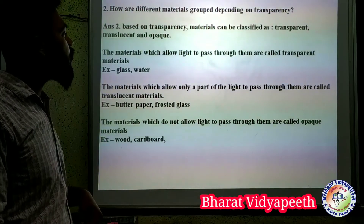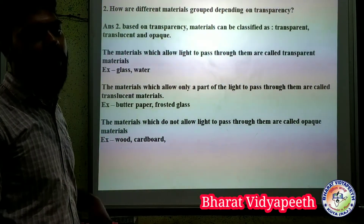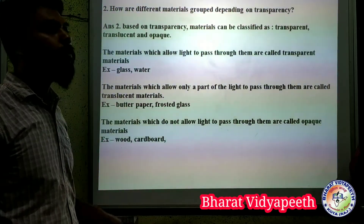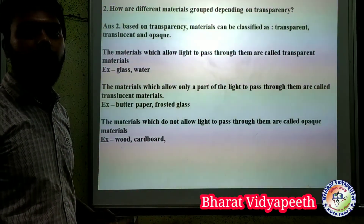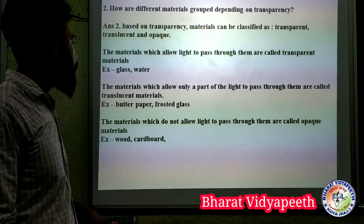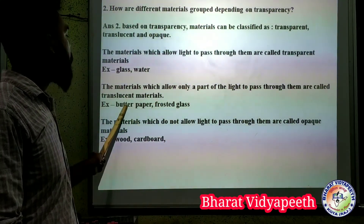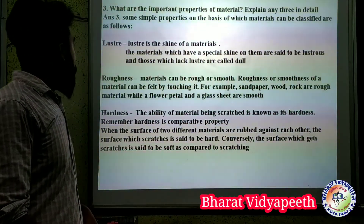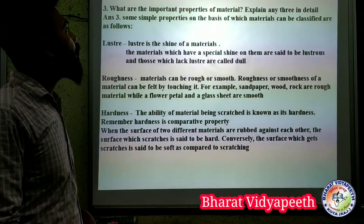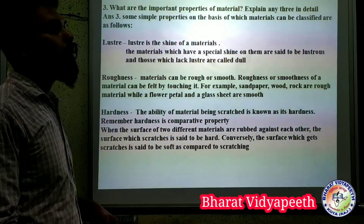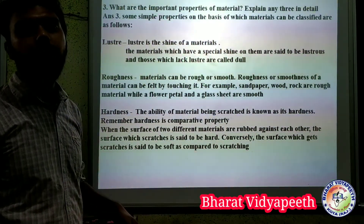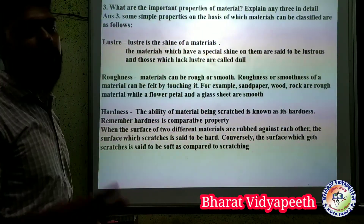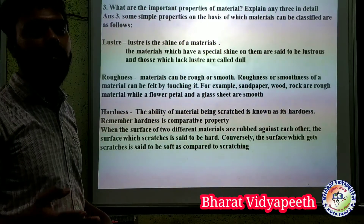A translucent material allows only a part of the light to pass through it. These three properties — transparent, translucent, and opaque — explain the light-passing behavior of materials.